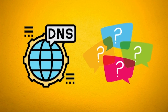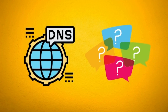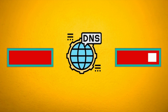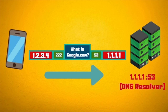In order to explain DOH we need to talk about what DNS does. DNS maps a domain name to an IP address so the packets can be routed through different networks in the internet. This is done by sending a UDP packet to the DNS resolver on port 53.